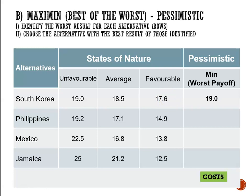Philippines has 19.2 million, 17.1 million, and 14.9 million. The worst of those costs is the highest cost, which is 19.2 million. Mexico has 22.5 million, 16.8 million, and 13.8 million — the worst of which is the highest cost, 22.5 million. And Jamaica has 25 million, 21.2 million, or 12.5 million — the worst of which is the highest cost, 25 million.